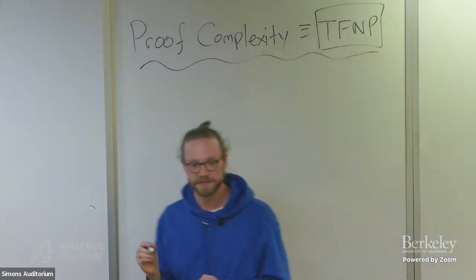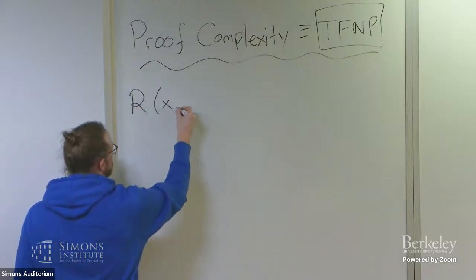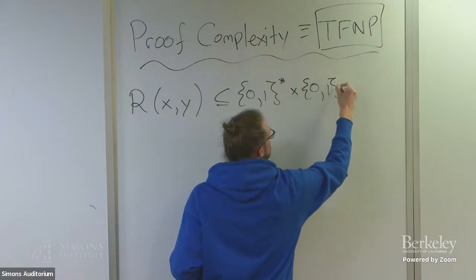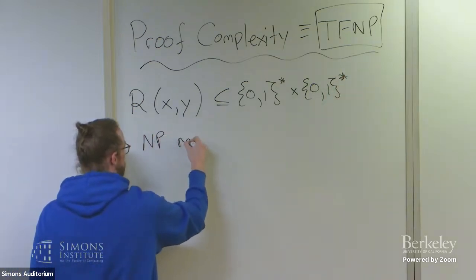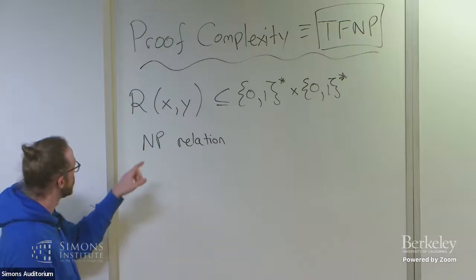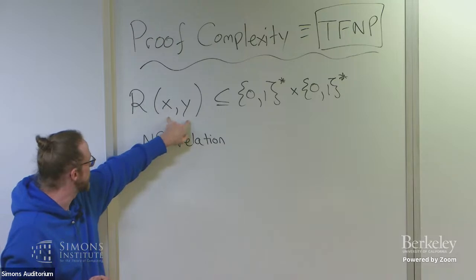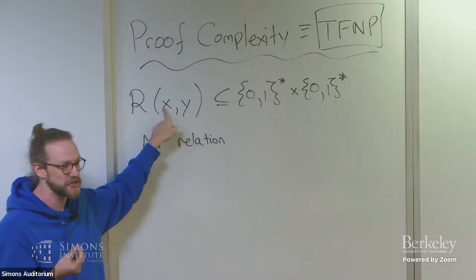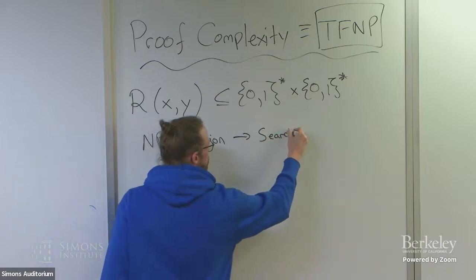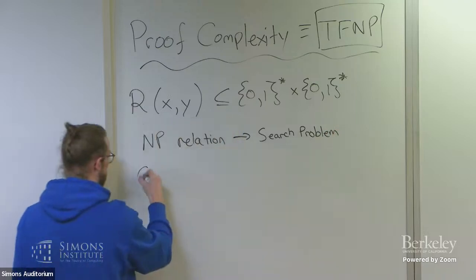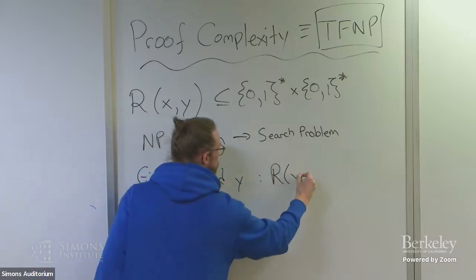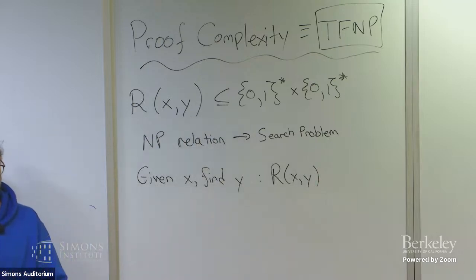So let's first remember what TFNP is. In the classical theory, let R(x,y) be some NP relation. So this means that it's polynomial time computable and also polynomial time bounded. So given x and y, I can compute R in polynomial time, and if there's any certificate for a given x, there's actually a certificate that's pretty short—it's polynomially bounded. Given such a thing, we get a natural search problem: given some x, find a y such that R(x,y) holds.